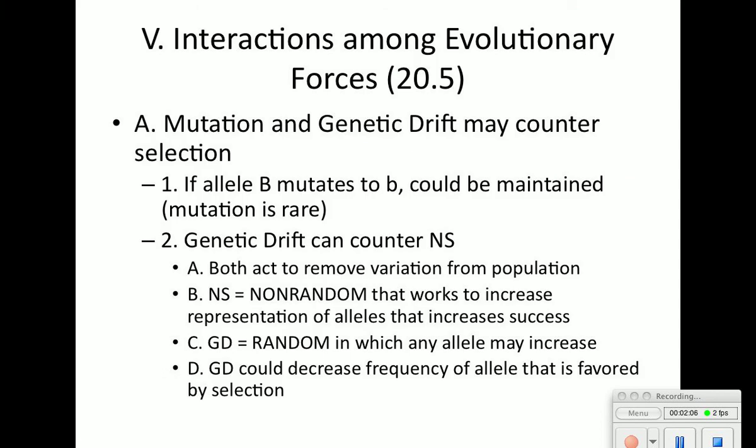We can also look at interactions among evolutionary forces. Mutation is rare — a very small occurrence. If allele B mutates to a small b, it could be maintained and maintain the allele frequency. We also know that genetic drift can counter natural selection — it can go against what nature selects for. Both genetic drift and natural selection act to remove variation from a population, because if you don't have a trait that fits the environment, you may not survive.